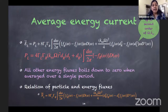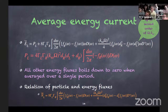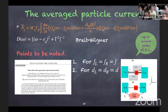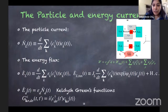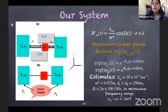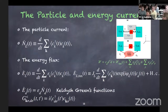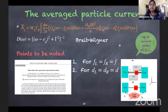A question is raised: what is big Ω? It is the frequency of the time-dependent electric field being applied, since the spin-orbit coupling is time-dependent. The small ω in the formula is simply the integration variable over energy.